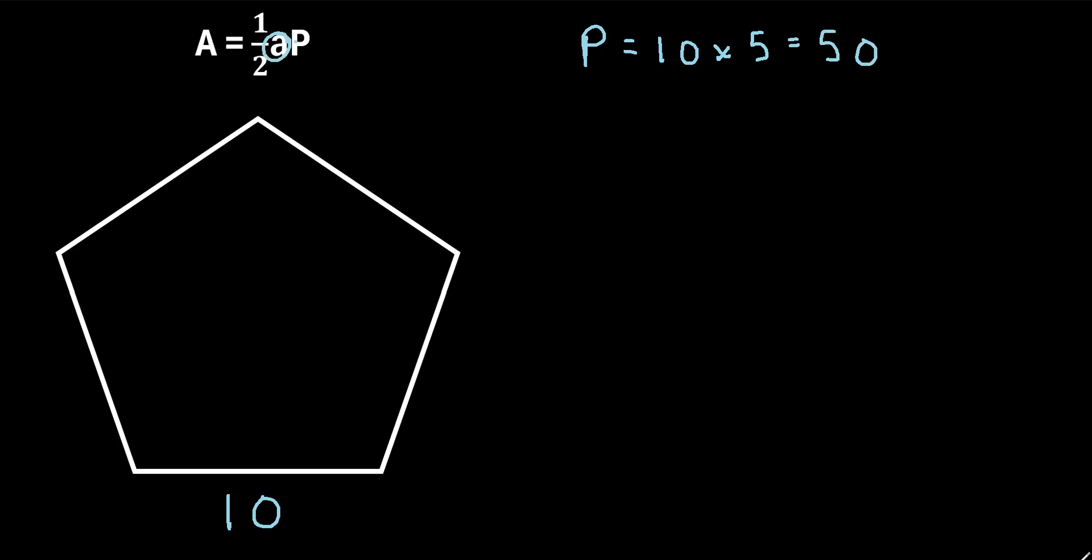The apothem, this A right here in the formula, is a little trickier to find. So remember, the apothem is the distance from the center of the polygon to the midpoint of one of the sides. So we'll call this A right here, this apothem. So how can we find that?